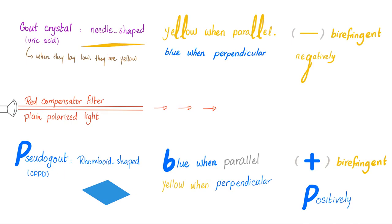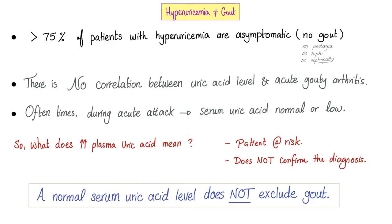Pseudogout crystals are positively birefringent and rhomboid-shaped. Hyperuricemia is not the same as gout. Just because you have hyperuricemia does not necessarily mean you will have a gouty attack. There is no correlation between serum uric acid level and acute gouty arthritis. During an acute attack, serum uric acid may be normal or even low. High plasma uric acid means you are at risk; it does not confirm the diagnosis.